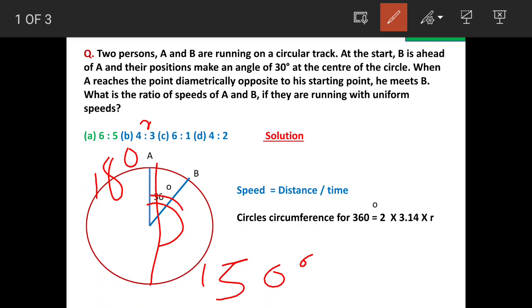We know the distance formula for 360 degrees, so we have to work out this for 180 degrees and 150 degrees, and divide these two distances with uniform time T. That will give us the ratio.